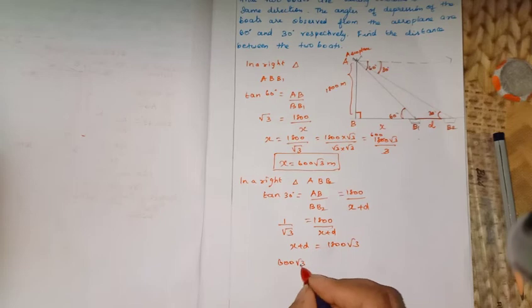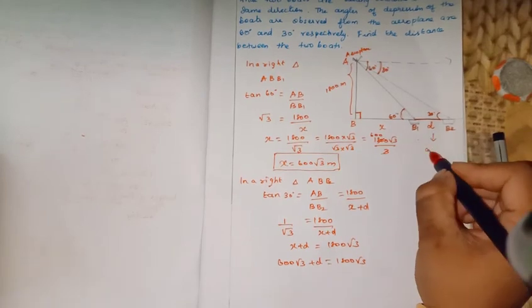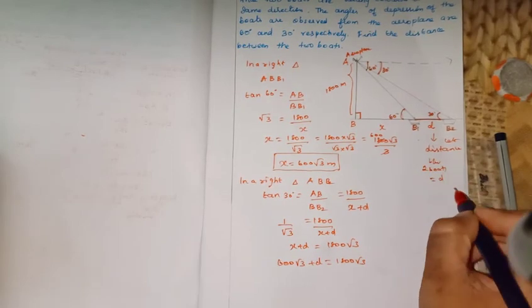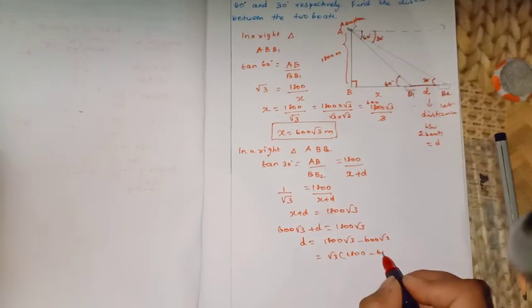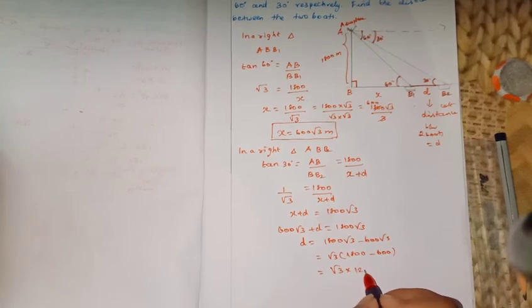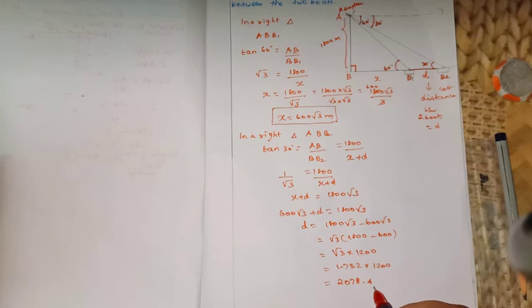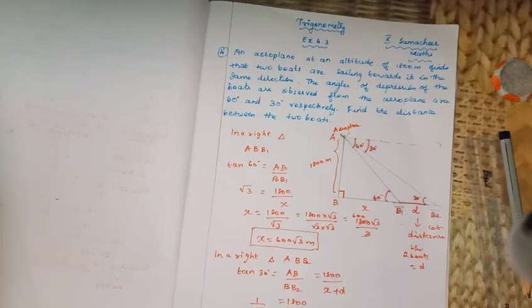Now substituting x = 600√3: 600√3 + D = 1800√3, so D = 1800√3 − 600√3 = 1200√3. Using √3 ≈ 1.732, we get D = 1200 × 1.732 = 2078.4 meters. The distance between the two boats is 2078.4 meters. Thank you students, please subscribe to my channel.